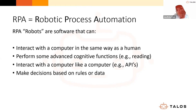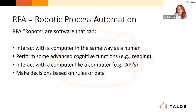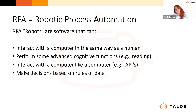When they get really smart, robots can make decisions based on data. Within any automation process there's a workflow with branches — if certain conditions are met, go down one path; if other conditions are met, go down another. These can be data-driven, and with more advanced capabilities you can use machine learning to build models that determine the right course of action given a complex set of inputs. To recap: robots can interact with computers like humans, perform cognitive functions, do computer-to-computer interactions, and support or fully perform decision-making.